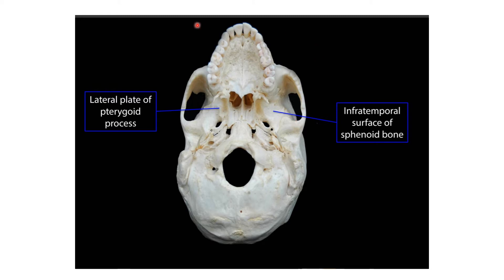Moving on to the boundaries of the infratemporal fossa. The roof is formed by the greater wing of the sphenoid — specifically the infratemporal surface of the greater wing of the sphenoid. This is the greater wing of the sphenoid, and this surface acts as the roof of this fossa.